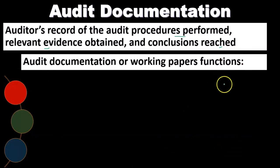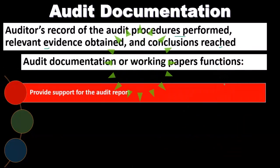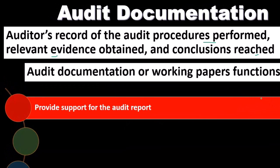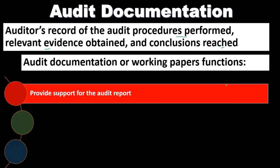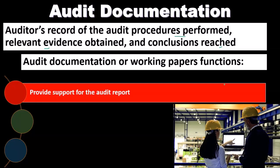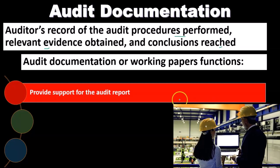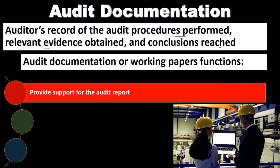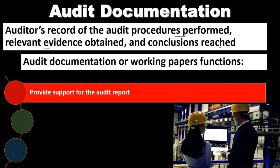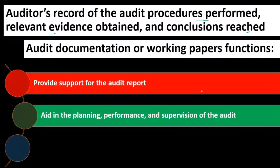Audit documentation or working papers functions. These are the functions of the audit documentation, which we often call the working papers. Working papers are something that we put together on the audit side of things, included as part of our audit documentation, part of our evidence, and part of our support to our opinion. They provide support for the audit report, and when we create the audit report providing our audit opinion, the documentation will of course support that opinion.